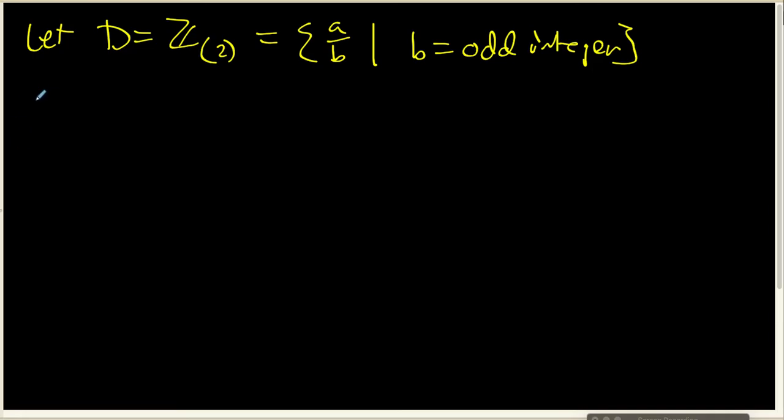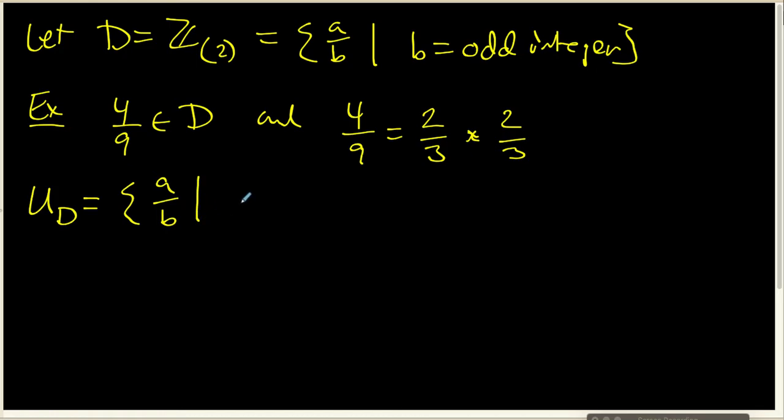What I want to do is look at a couple of examples. 4/9ths clearly belongs to D, and 4/9ths can be written as 2/3rds times 2/3rds. And neither one of these elements are units. I want to remember that from a previous video, the units inside this domain are the fractions that look like a over b, where both a and b are odd integers.